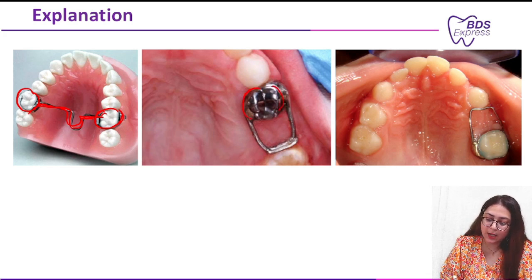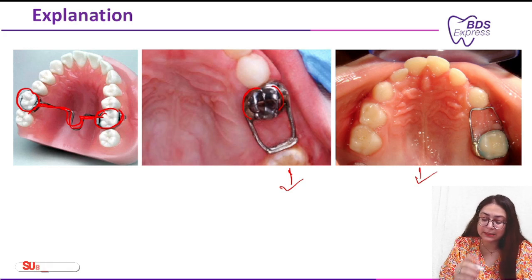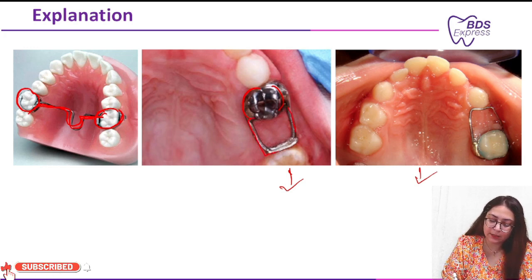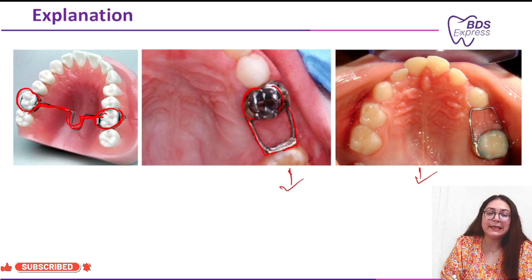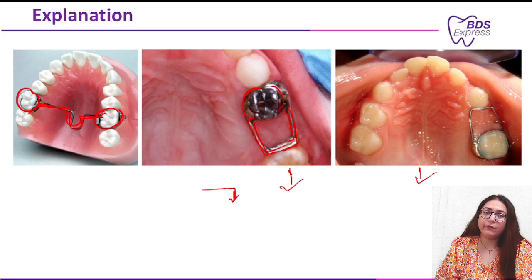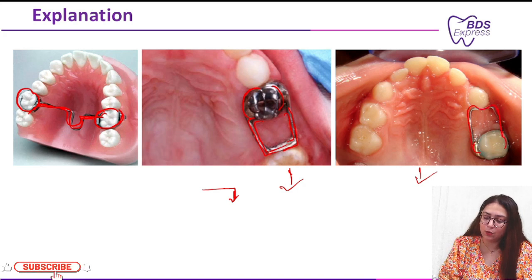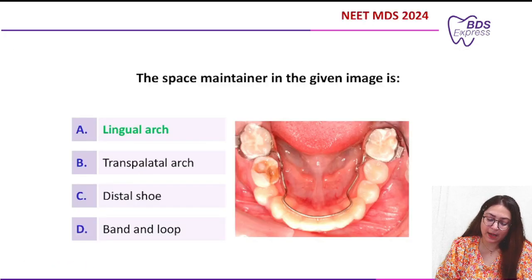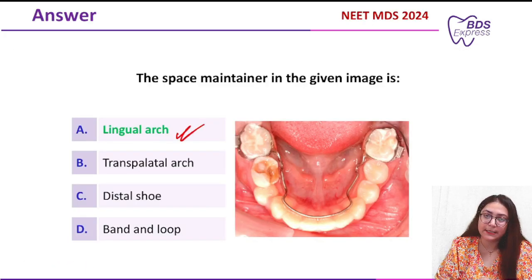This is your distal shoe. This design looks almost similar, but if the distal shoe name is there, this will be distal shoe. It is specially given for the second molar to erupt properly and in its place. It contains a hook which goes inside the gingiva. We have lectures on that — you can check our lectures. The next was band and loop: this is the band and this is the loop. All these are the shapes for the space maintainer. Coming back to our question, the correct answer is lingual arch space retainer.